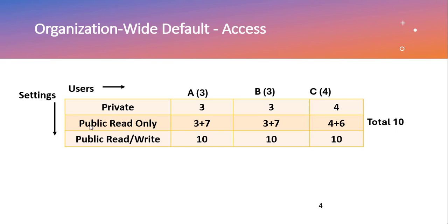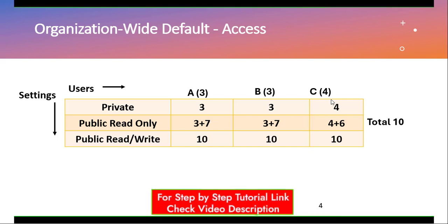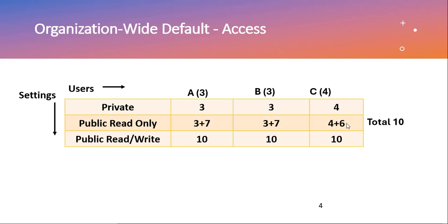If the OWD of a particular object is public read-only, then user A can access one record owned by himself, and the other seven records — three from user B and four from user C — are read-only for user A. Similarly, user C has four records he can read and write, and six records from A and B he can only read.